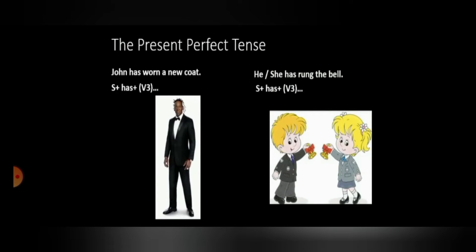Here, the subject is John, which is the name of the person, plus has plus the third form of the verb. He has rung the bell. She has rung the bell.